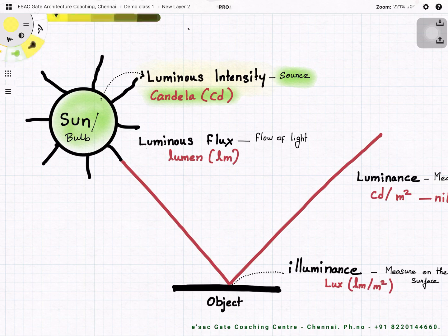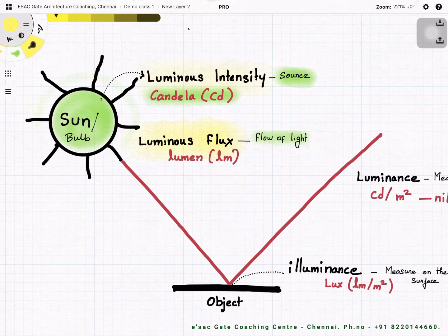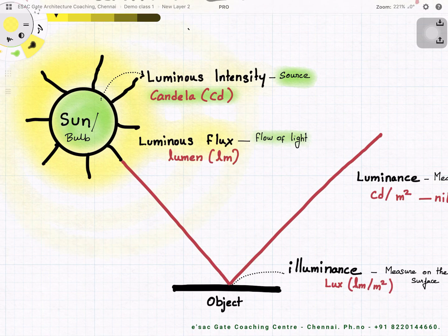Next is luminous flux. The moment we hear the word flux, flux means flow — flow of light. We know that from a point source, light travels equally and evenly in all directions, spreading spherically. This flow of light in all directions is called luminous flux.